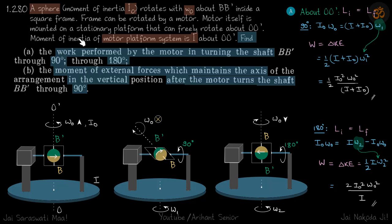I've framed the question in my own language to make it easier to understand. From the diagram you can see we have a sphere with moment of inertia I₀. This sphere rotates with ω₀ about axis BB' inside a square frame, and the axis BB' is the one about which it rotates with ω₀.